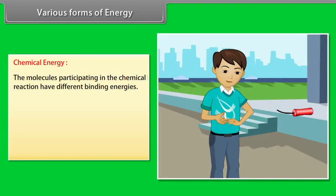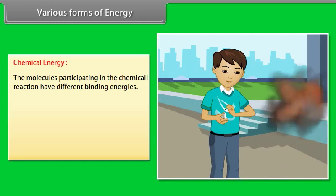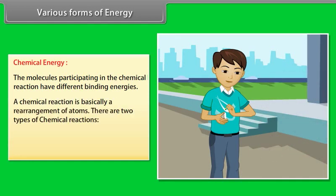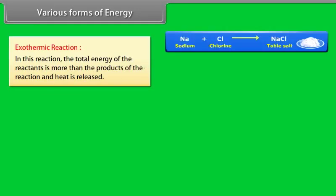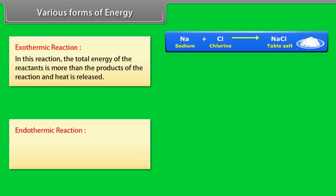Chemical energy. It arises from the fact that the molecules participating in the chemical reaction have different binding energies. A chemical reaction is basically a rearrangement of atoms. There are two types of chemical reactions: Number 1, exothermic reaction, and Number 2, endothermic reaction. Exothermic reaction: In this reaction, the total energy of the reactants is more than the product of the reaction and heat is released. Endothermic reaction: In this reaction, the total energy of the reactants is less than the product of the reaction and heat is absorbed.